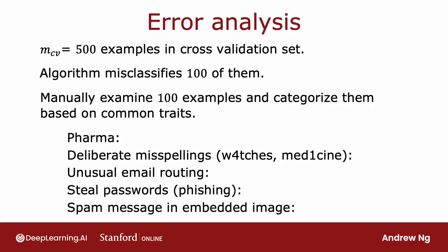Specifically, what I would often do is find a set of examples that the algorithm has misclassified from the cross-validation set and try to group them into common themes, common properties, or common traits.